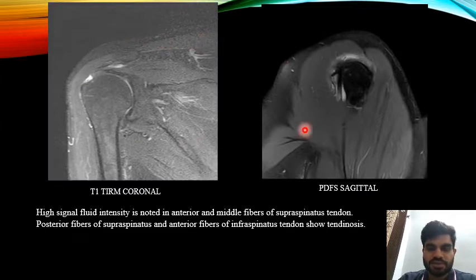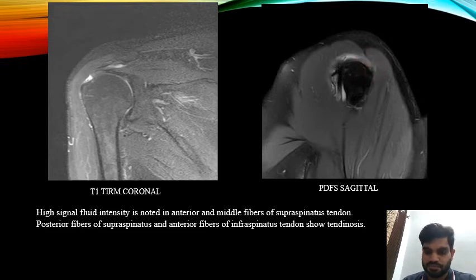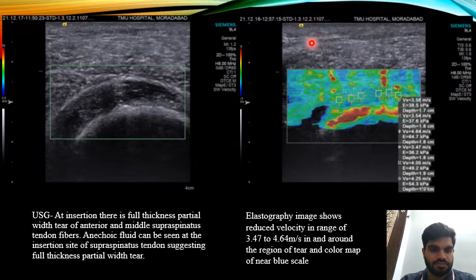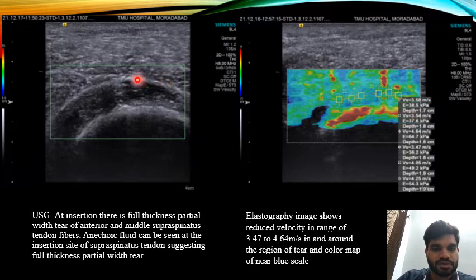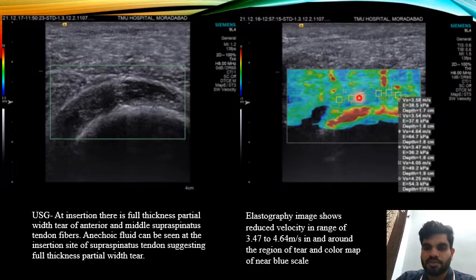This T1 coronal and PD fat-saturated sagittal image shows high signal fluid intensity in the anterior and middle fibers of the supraspinatus tendon. The posterior fibers of supraspinatus and anterior fibers of infraspinatus tendon show tendinosis. On ultrasound at insertion, there is a full thickness partial-width tear of the anterior and middle supraspinatus tendon fibers, with anechoic fluid seen at the insertion site. On elastography, it shows reduced velocity in the range of 3.47 to 4.64 m/s in and around the region of tear, with a color map of near blue scale.